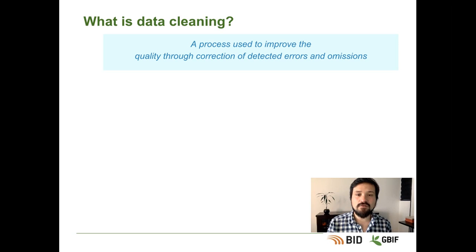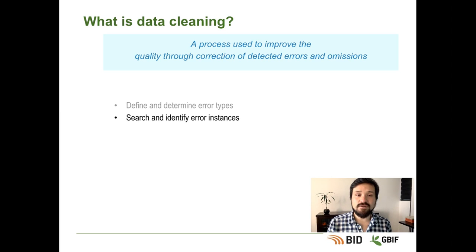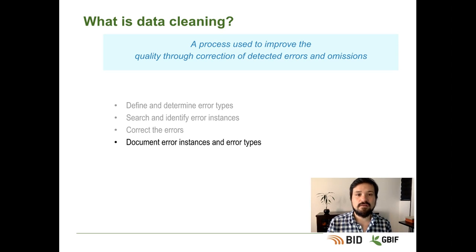The structure that supports the process can be summarized in five key points, all of them related to errors: define and determine types; search and identify instances; perform the corrections; documentation; and finally, modify data entry procedures.